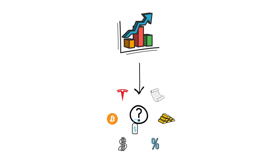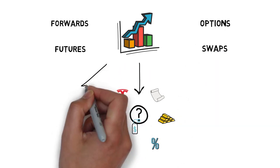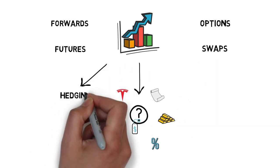Some of the most commonly used derivatives are forwards, futures, options and swaps. There are two main use cases for derivatives: hedging and speculation.